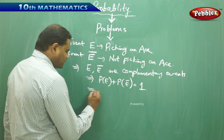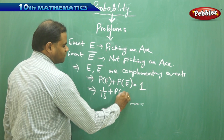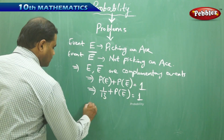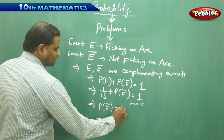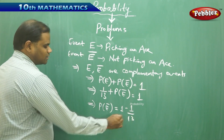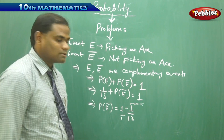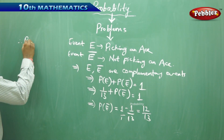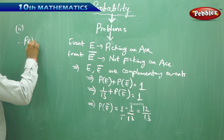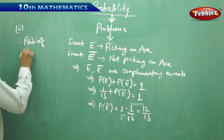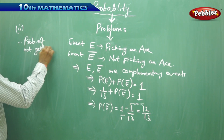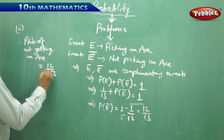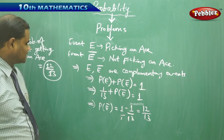The probability of picking an ace is 1 over 13, so 1 over 13 plus P of E bar equals 1. Therefore P of E bar is 1 minus 1 over 13, which on simplification through LCM gives 12 over 13. Therefore, the probability of not getting an ace when a card is picked from the playing cards is 12 over 13.